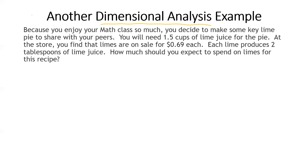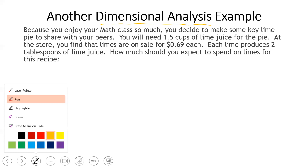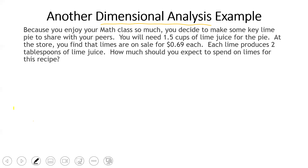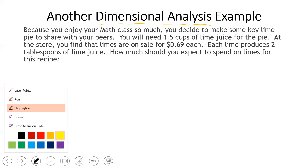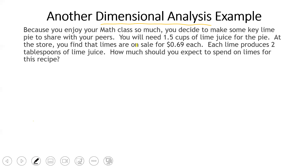We're trying to figure out how much you should expect to spend on limes for this recipe. First, let's highlight the important information: we need 1.5 cups of lime juice for the pie, limes are on sale for 69 cents each, and each lime produces two tablespoons of lime juice. When setting this up, we want to start by identifying all the rates we see in the problem.